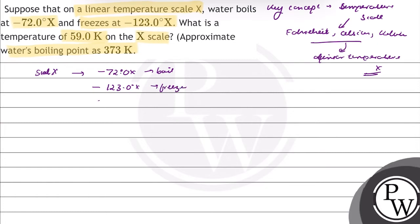So, we are asking what is the temperature of 59.0 Kelvin on X scale? Now, we know that at Kelvin scale, water freezing point is 0°C or 273 Kelvin and water boils at 373 Kelvin.